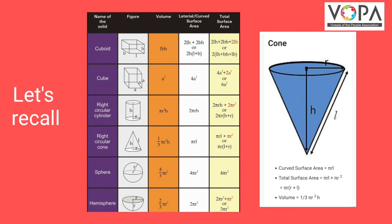A cone has radius r, perpendicular height h, and slant height l. Its curved surface area is equal to πrl, and volume is equal to (1/3)πr²h.